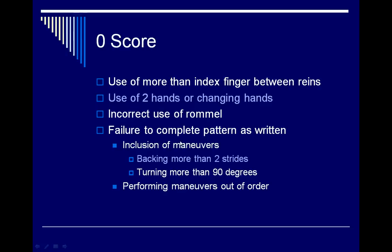Failure to complete the pattern as written also results in a zero score. The most common examples include the horse backing more than two strides — two strides being four steps — so if the horse takes a fifth step back, that is considered an inclusion of maneuver. Also, turns of more than 90 degrees when exiting a rollback or during spins are considered inclusion of maneuver, as is performing maneuvers out of order.